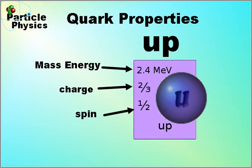Just looking at the individual quarks, we have the up quark at mass energy of 2.4 MeV. That means its mass would be 2.4 MeV over c squared. It has a charge of plus two thirds and a spin of a half. And all quarks have a spin of a half.